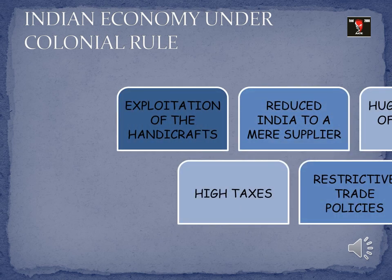Starting with Indian economy under colonial rule — the objective of the British rule in India was to reduce India to a mere exporter or supplier of raw materials. India was an agrarian nation with huge capacity for producing best quality raw materials. At that time, the British were expanding their industries in Britain, which required good quality raw materials so that the demand for their finished goods in global markets would increase.